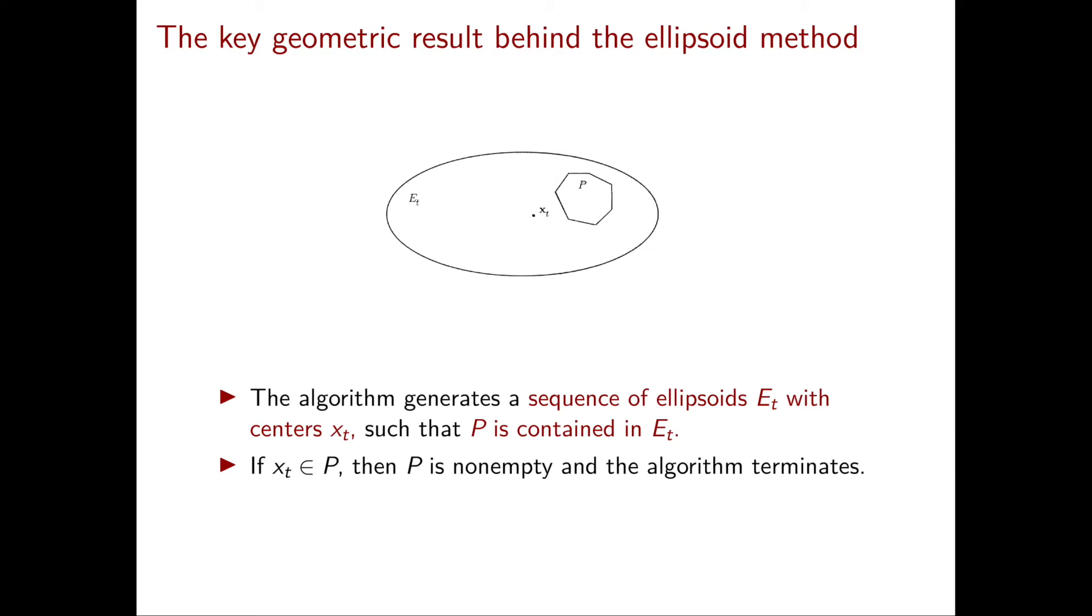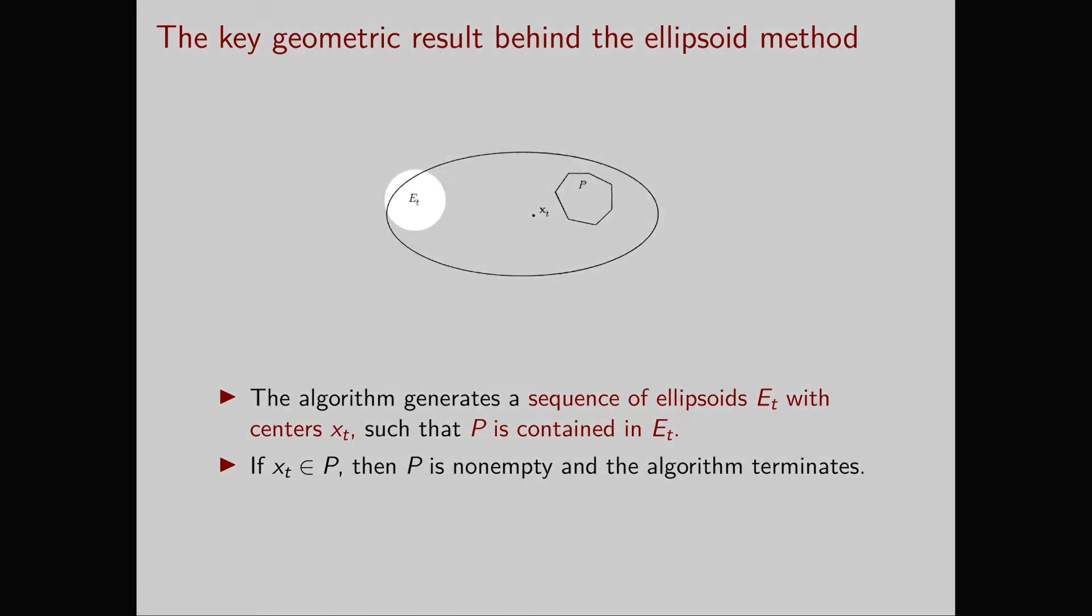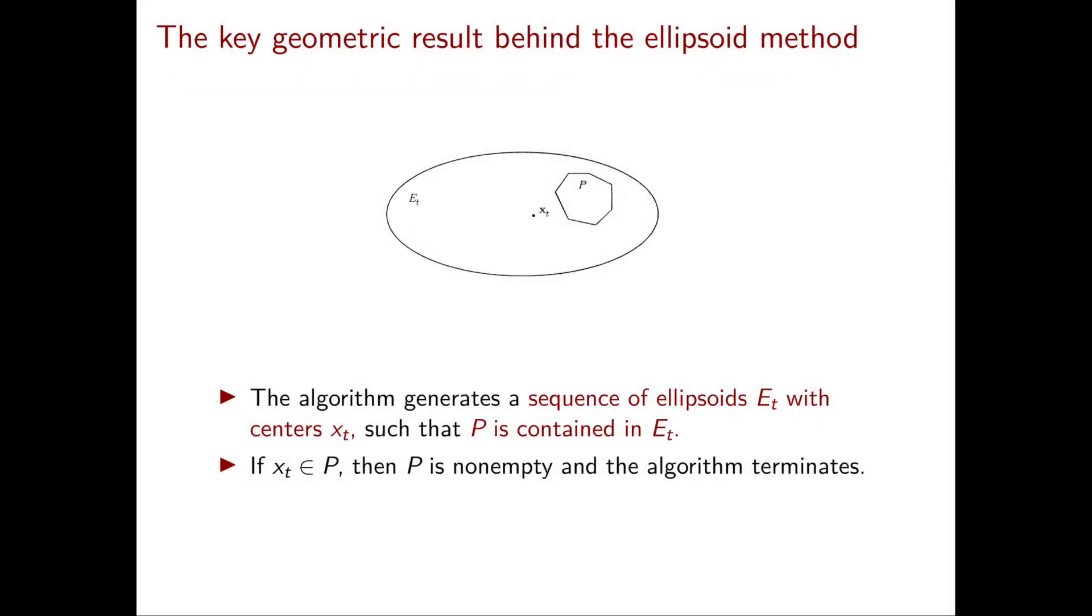Now the ellipsoid method at each iteration generates a different ellipsoid. So let's focus on a specific iteration and let's say that the latest ellipsoid generated is E_t. Now the ellipsoid E_t is guaranteed to contain the polyhedron.